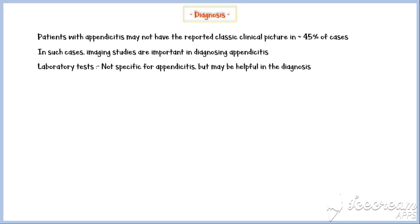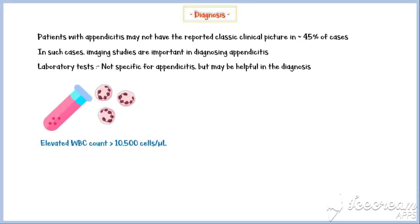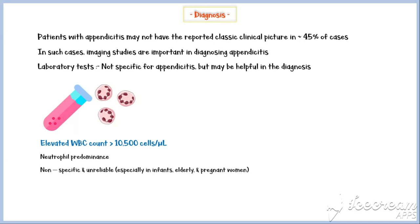Now let's discuss the diagnosis of appendicitis. Patients with appendicitis may not have the classic clinical picture in about 45% of cases; in such cases, imaging studies are important. Laboratory tests are not specific for appendicitis but may be helpful. In blood tests, most patients with appendicitis will have an elevated white blood cell count, typically more than 10,500 cells per microliter, with a neutrophil predominance. However, this is highly nonspecific and unreliable, especially in infants, elderly patients, and pregnant women.